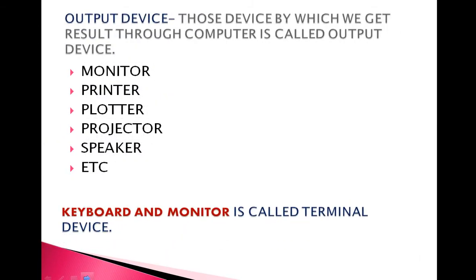Output devices are those devices by which we get results from the computer. Examples include monitor, printer, plotter, projector, and so on. The keyboard and monitor together are called terminal devices.